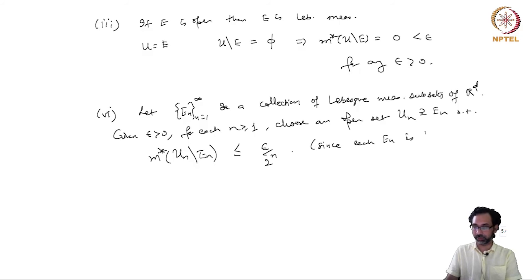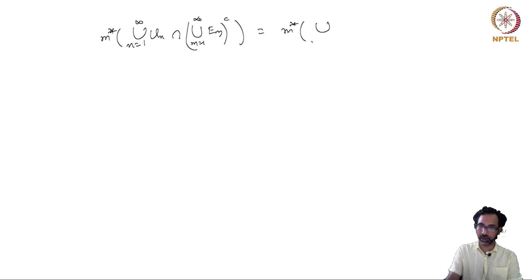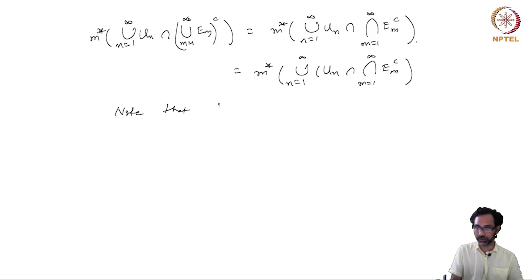Recall from the last lecture that finite additivity holds for what are called separated sets. E and F are called separated if the distance between these two sets, defined as the infimum of all Euclidean distances with x belonging to E and y belonging to F, is strictly greater than 0. We have seen that finite additivity for the Lebesgue outer measure holds for separated sets.